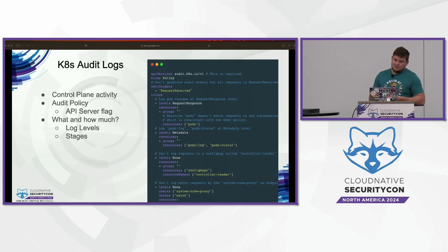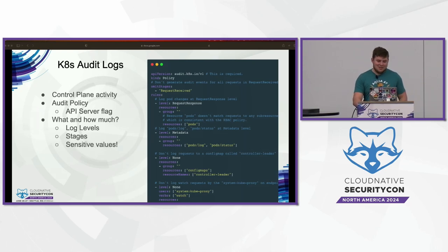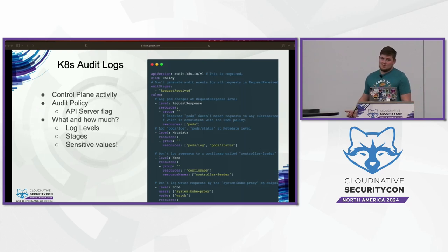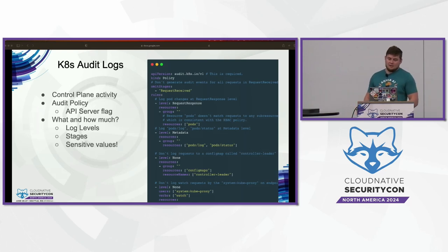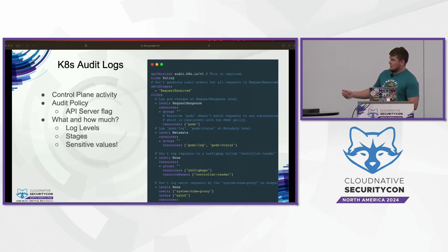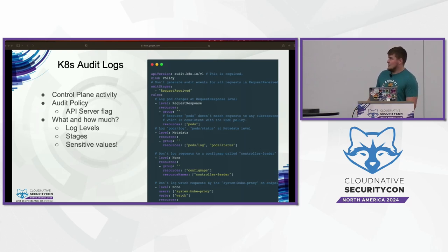A couple slides later I'll talk about which stage has the most security value. Finally, because this is a security talk — you can actually accidentally configure this to log sensitive values. Think about resource types like your secrets, your config maps (which hopefully don't have secrets in them), or custom resource definitions with sensitive properties. If you've configured them to log their full request, that'll be reflected in your logs. If you look at managed cloud providers, you can see they've exempted those out in the audit policy they configure for you.